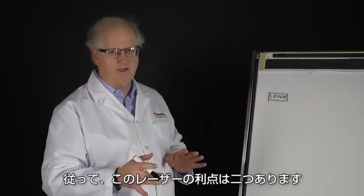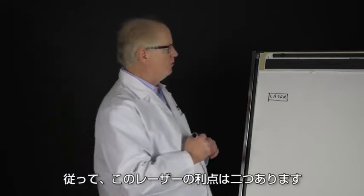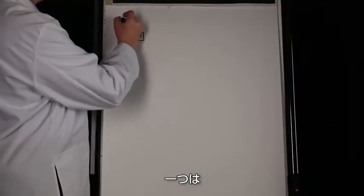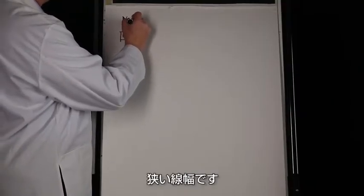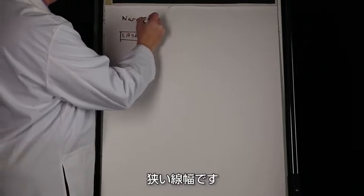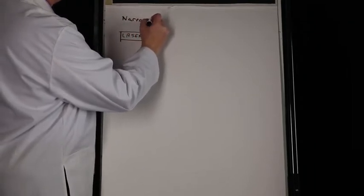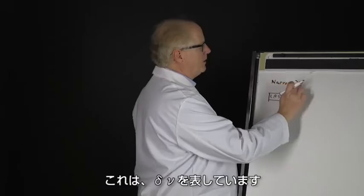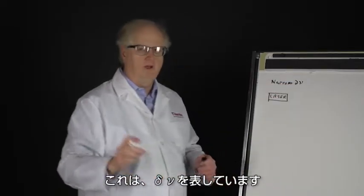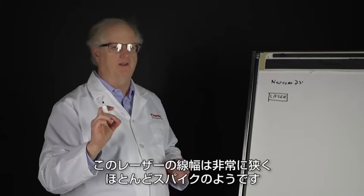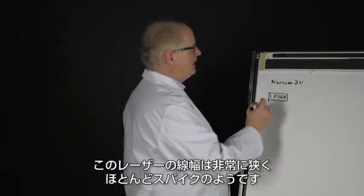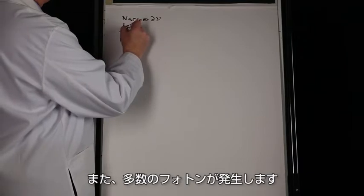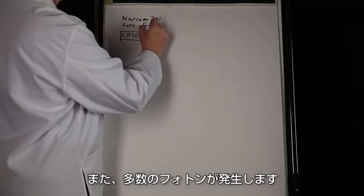So the advantage of the laser is twofold. One is it has the narrow line width, so I'm representing that as delta nu. It has a very narrow line width, it's like a spike almost. It also has lots of photons.